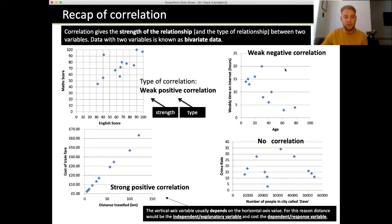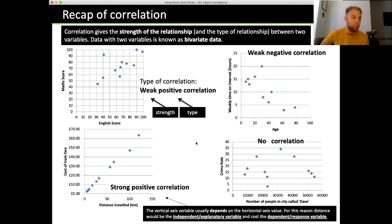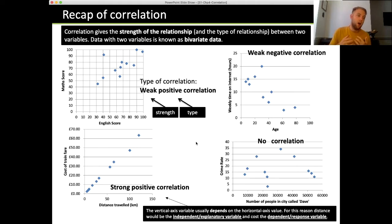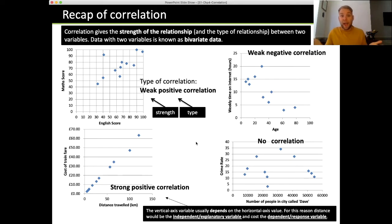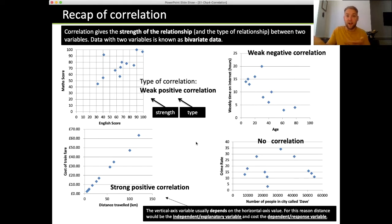Looking at the negative correlation example in the top right: age is the independent variable. You don't ask 'how many hours do people spend on the internet and what age are they?' You'd say 'what age is the person we're looking at, and then how much time do they spend?' So age is the variable that's just changing — it's the independent variable.